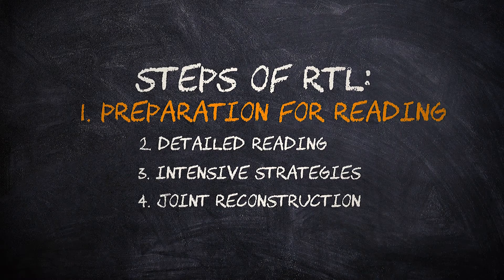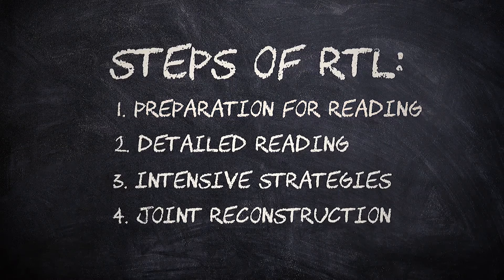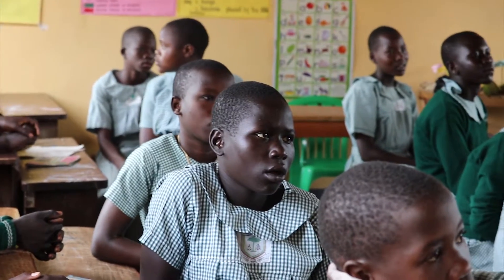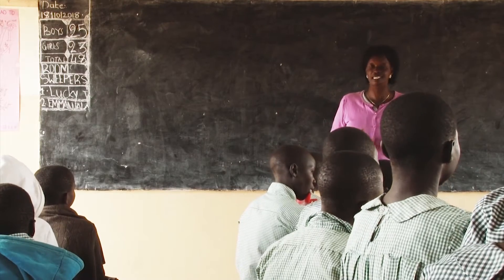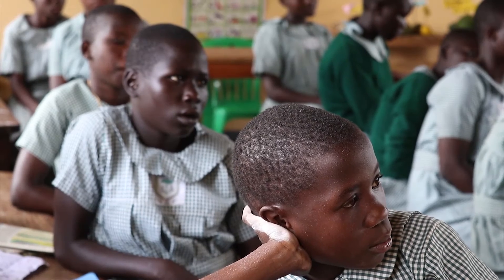The first step for RTL is preparation for reading. It's important because it prepares the child to know what text they are going to read. When they went to the table, the waiter and the waitresses came and asked for their order. In this step, the teacher either tells a story, gives a song, or gives a short skit to prepare the child to become ready to read.